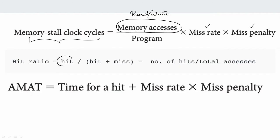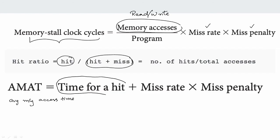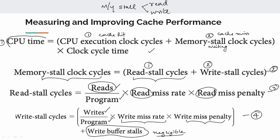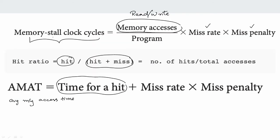The next formula is AMAT — average memory access time. If we have a cache hit, we take the hit time; if we have a cache miss, we add the miss penalty. So average memory access time equals time for a hit plus miss rate into miss penalty.